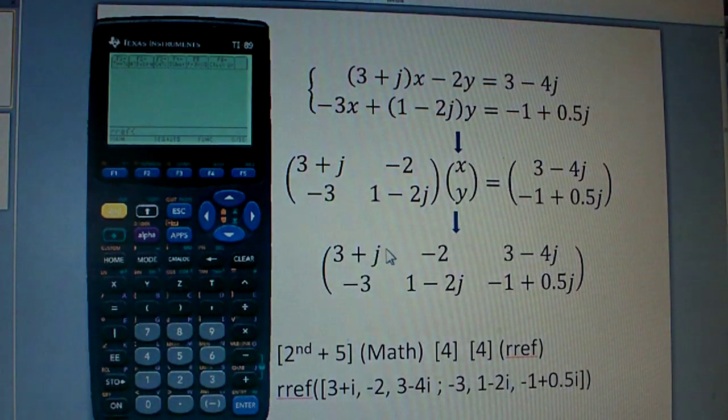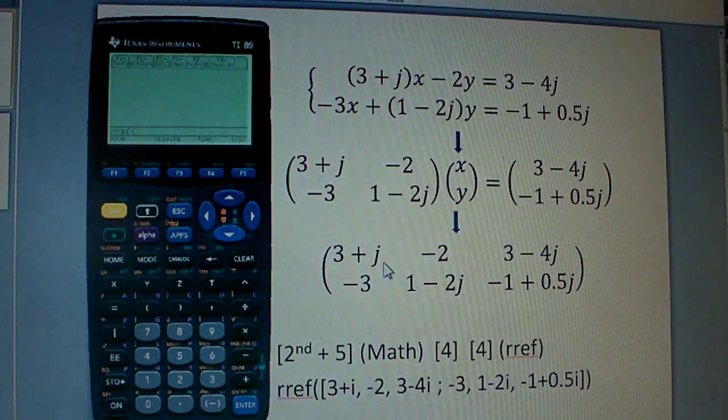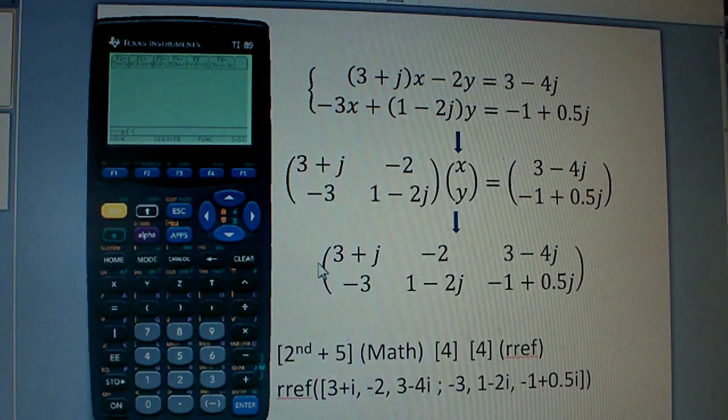However, keep in mind that J is the square root of negative 1, which mathematicians and physicists like to call I. So when you plug in this matrix into the calculator, you should be using I instead of J.